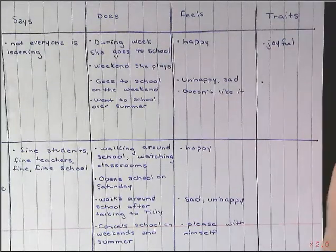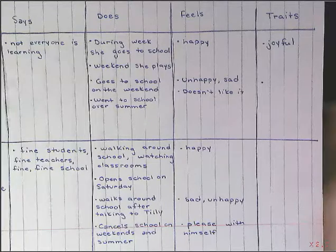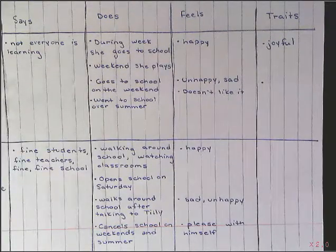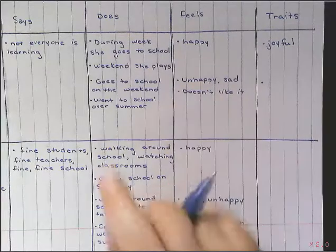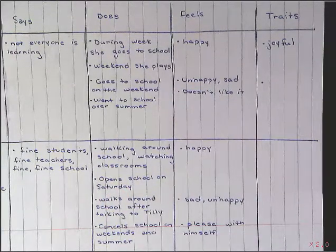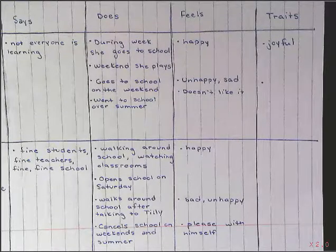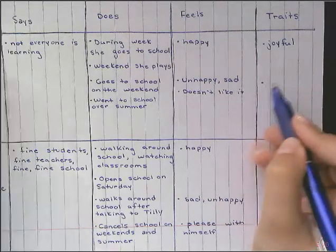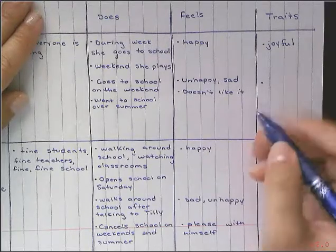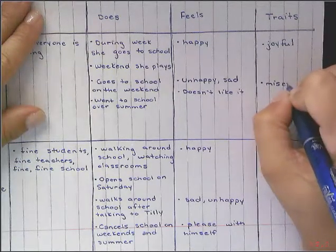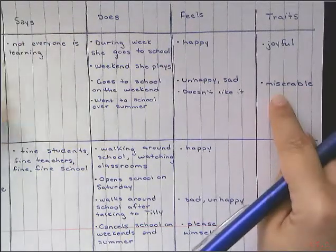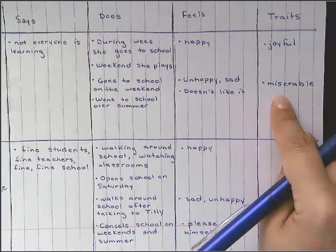However, Tilly changed in the middle of the story. When they started having to go to school all the time, Tilly became unhappy and sad. Looking at my chart under sad: depressed, serious, gloomy, miserable, unhappy, discouraged, sorrowful, and mournful. I've already used 'unhappy,' so I don't want to carry that word over — I want to use a new, more interesting word. I'm going to use miserable, because Tilly was kind of miserable when she didn't get to play at home.